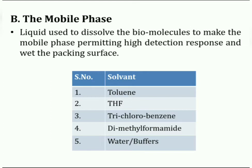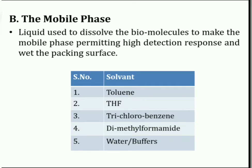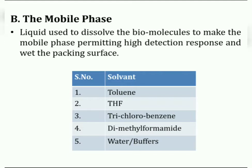The second component is the mobile phase. The mobile phase used in gel permeation chromatography is composed of a liquid used to dissolve the biomolecules, making the mobile phase permitting high detection response and wetting the packing surface. Examples of solvents used as mobile phase are toluene, THF (tetrahydrofuran), trichlorobenzene, dimethylformamide, and water or buffers.